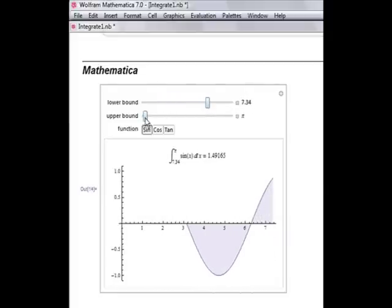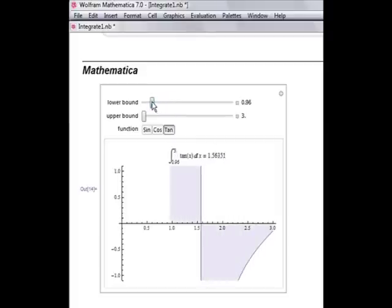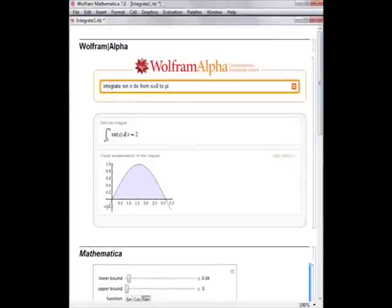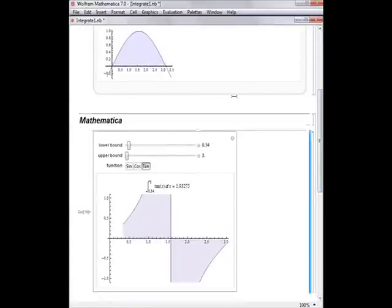My students now can move these sliders and see what happens as that lower bound increases. Or they can go backwards and see what about the upper bound? What if that increases or decreases as well? I also created some functions here to look at sine, cosine, tangent, and play with that as well. This allows full student integration and conceptualization of the problem, from ease of use in Alpha to exploration in Mathematica.